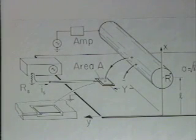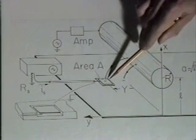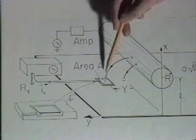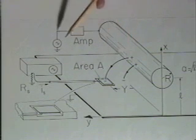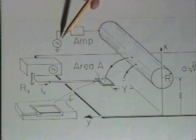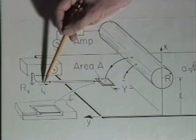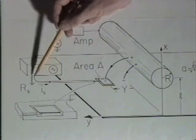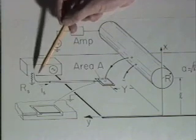The surface charge density distribution on the ground plane is proportional to the normal component of the electric field, and is therefore proportional to the voltage of the cylinder. Conservation of charge requires that the probe current be the time rate of change of the charge on the probe surface. It follows that the voltage induced across the internal resistance of the scope is proportional to the rate of change of the applied voltage.